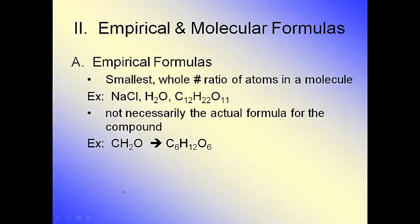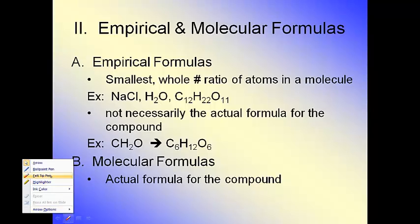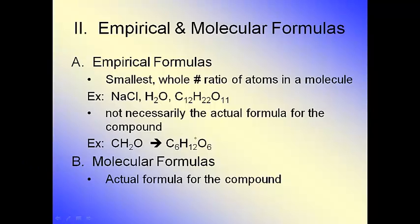When you have something that still can be reduced, that's called a molecular formula. Molecular formulas are the actual formula for the compound. So C6H12O6 is your molecular formula, and CH2O is your empirical formula.